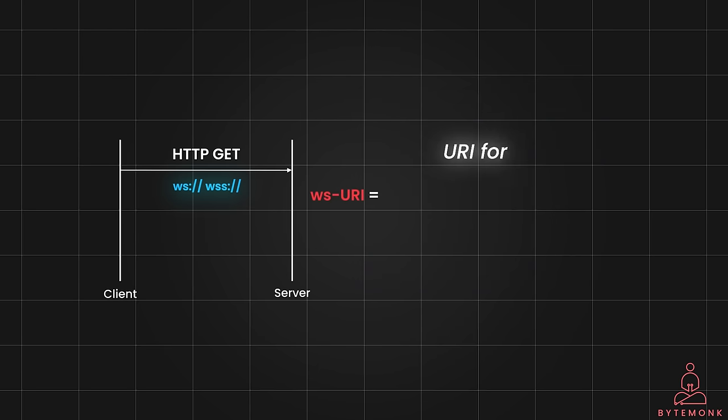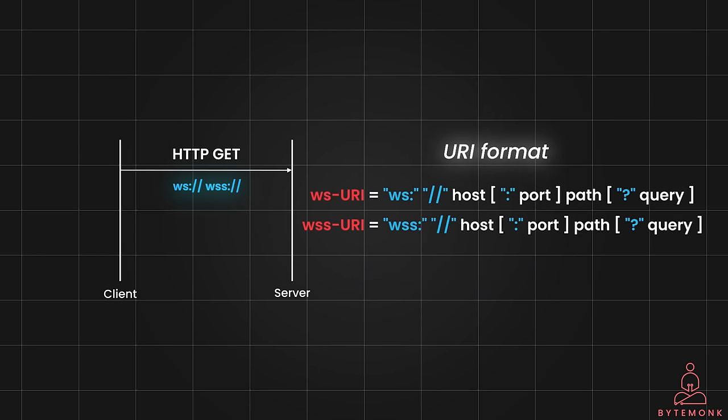WebSocket has a default URL format. It can be either WS or WSS. Just like the HTTP protocol, the port component is optional — the default port 80 is used for WS and 443 is used for WSS. WSS is used as a secure URI as a secure flag is set and a TLS handshake is done between server and client for secure communication.